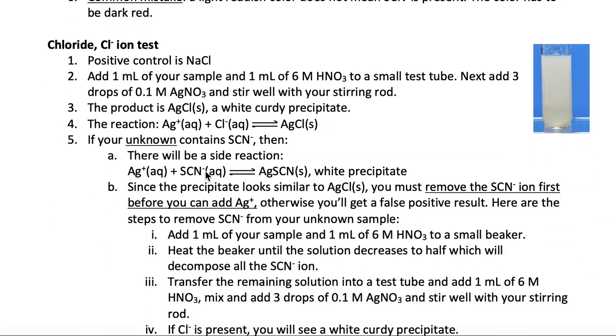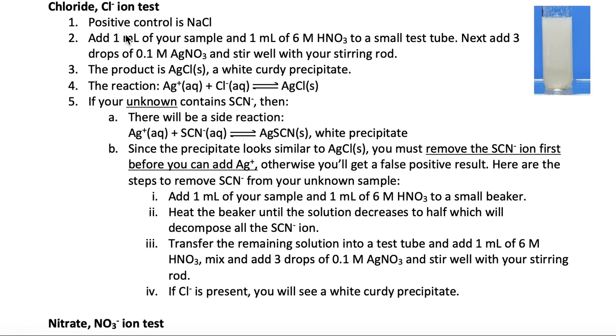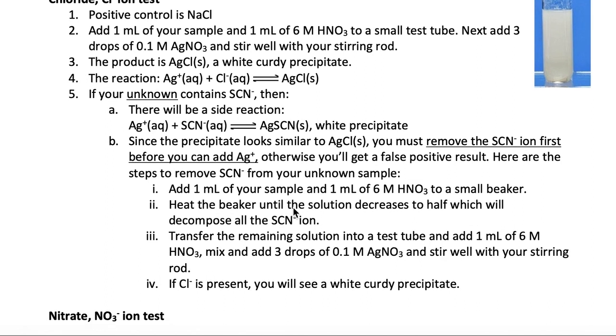So if you do have thiocyanate, then you have to remove it first before you can test for the presence of chloride. To remove the thiocyanate, you have to follow the steps below. So add one milliliter of your sample and one milliliter of nitric acid to a small beaker, and then you're going to heat the solution until the volume decreases by half. What the heating does is decompose all the thiocyanate ion, so you don't have to worry about it for your test.